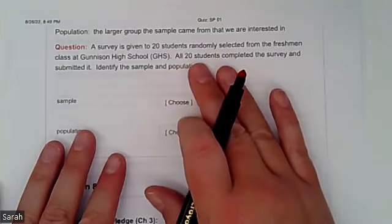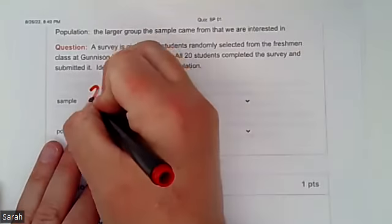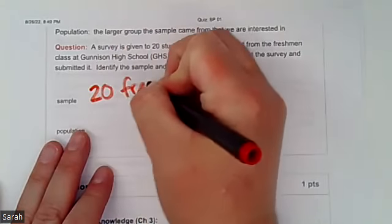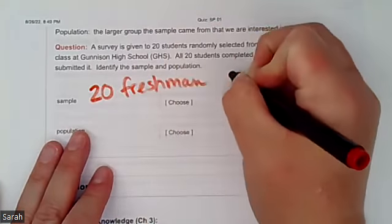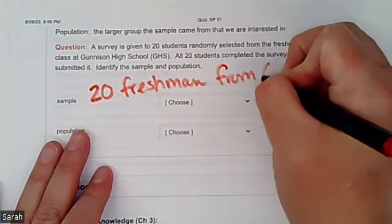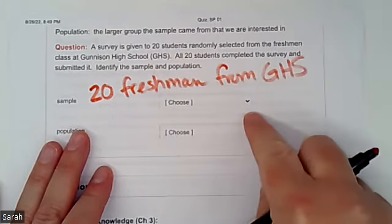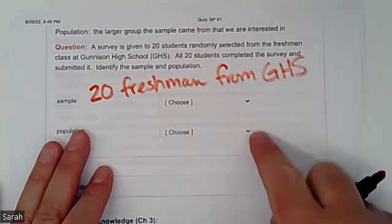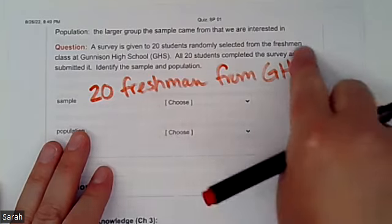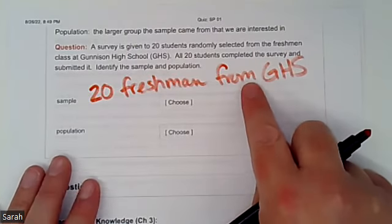So the sample, it does say all 20 students answered it. So I would say 20 freshmen from GHS. And you'll notice that it says choose here. You'll have drop-down choices to make here. So you'll want to match one of these drop-down choices to this idea.